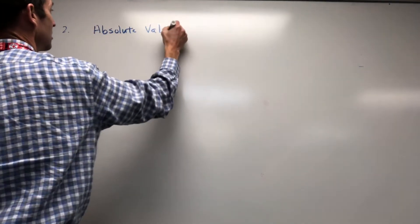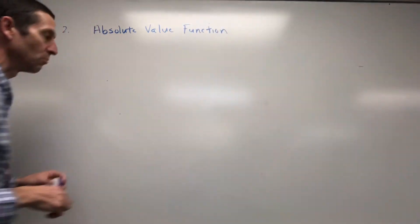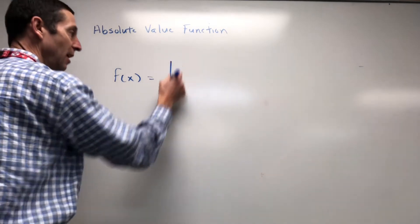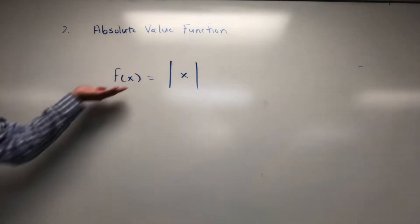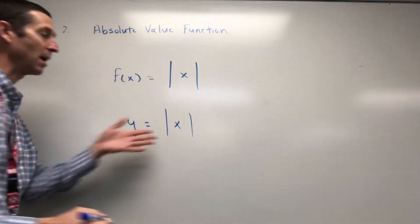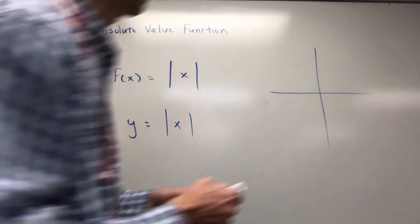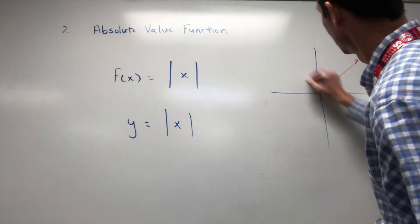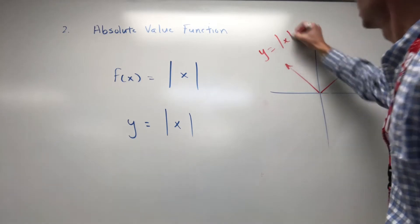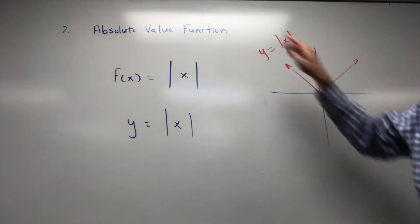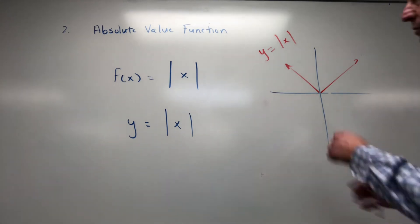Next up is absolute value. You write your function with the absolute value bars, and when graphing people just write y equals absolute value of x. The parent function for absolute value looks like a V-shape. This is your second parent function — when you recognize that shape, you know it's absolute value.